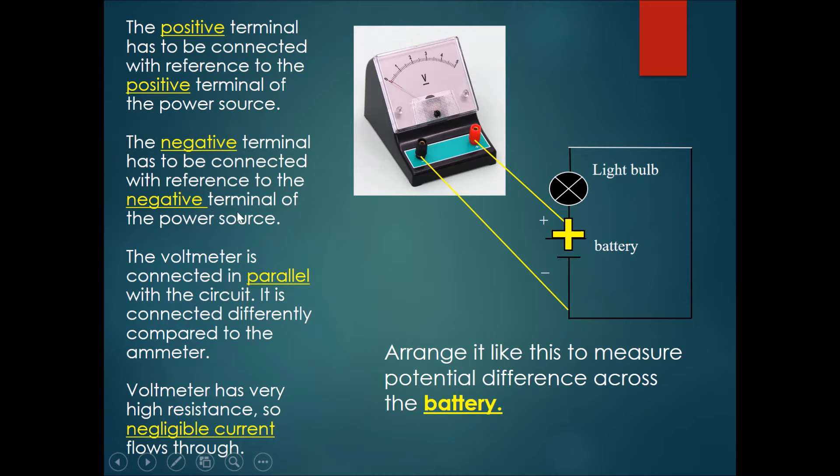This sounds similar to the ammeter connection. However, it actually is completely different because the voltmeter must be connected in parallel with the circuit. It is connected differently compared to the ammeter. The ammeter, if you remember, had to be connected along the main line, maybe somewhere right here. However, the voltmeter must be connected in parallel to the main line, which means it must not be on the main line itself.